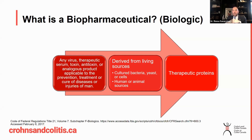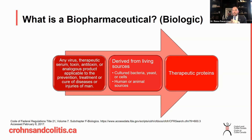By definition, a biologic is any virus, therapeutic toxin, or antitoxin that can be used for the prevention, treatment, or cure of disease or injuries in man. That's a broad scientific definition. They can be derived from a variety of living sources, and in the end what we're developing are these therapeutic proteins.